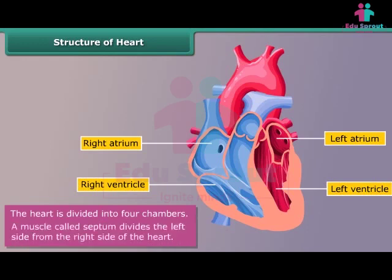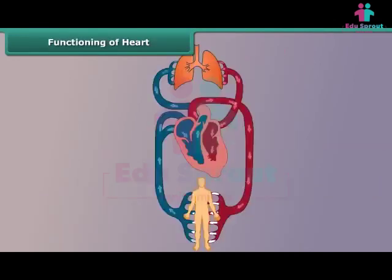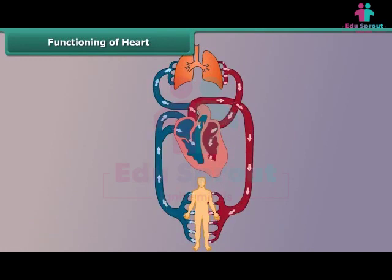The muscle called septum divides the left side from the right side of the heart. The right side of the heart pumps deoxygenated blood received from the other parts of the body into the lungs for purification. The left side of the heart pumps oxygenated blood received from the lungs to the rest of the body.